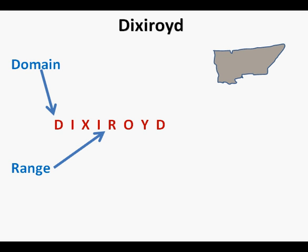The second letter of Dixieroid is I and represents input, as in the input value of a function or relation. The next letter we'll look at is the sixth letter, O for output. The word output is related to input, but has an opposite meaning of input.